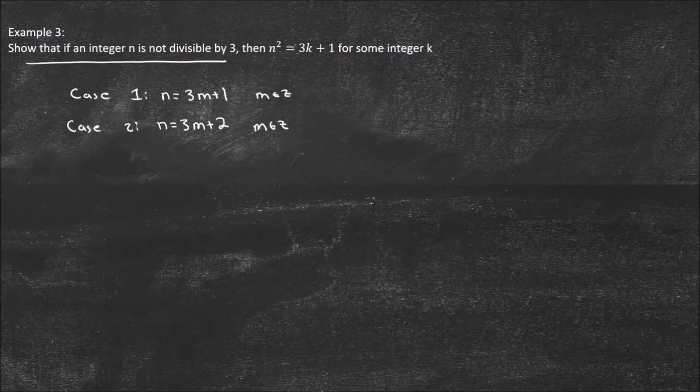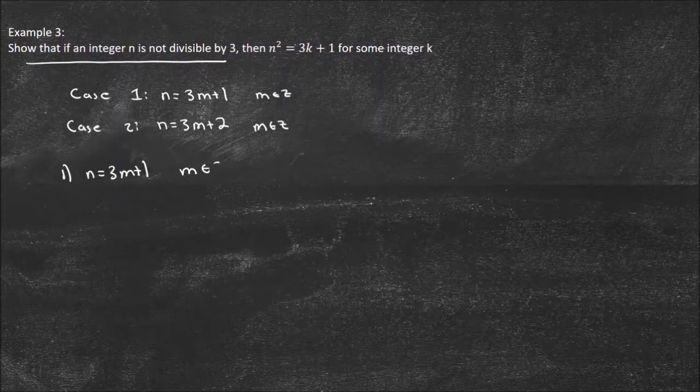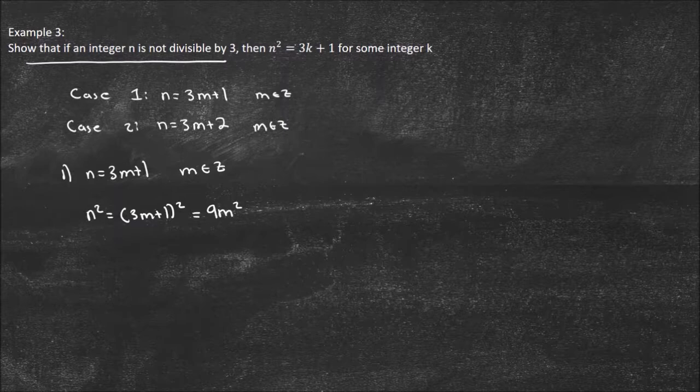Case 1. We're going to say n equals 3m plus 1, where m is an element of Z. Now we basically solve by direct proof. So now I'm going to plug that into n squared. So n squared equals 3m plus 1 squared. You would FOIL that out. You should get 9m squared plus 6m plus 1.